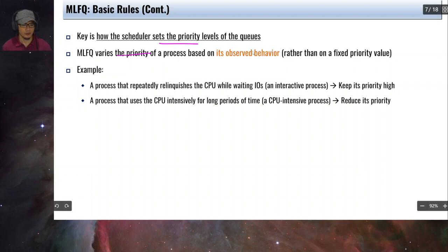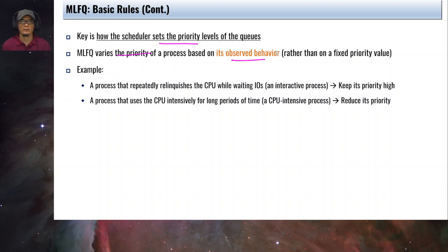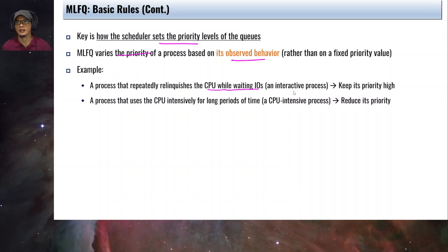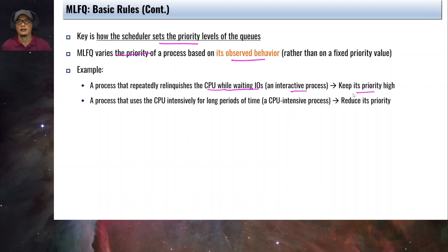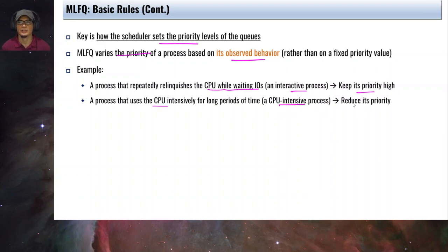The key is how the scheduler sets the priority levels of the queues. MLFQ will vary the priority based on the observed behavior of the process — there is some kind of an audition mechanism, meaning a process will be tested and based on its behavior the priority will be adjusted accordingly. For example, if a process repeatedly relinquishes the CPU while waiting for IO, it must probably be an interactive process, and that process will be given a higher priority. If a process uses the CPU intensively for long periods of time — a CPU-intensive process — then the priority of that process will be reduced, since interactivity is not required.